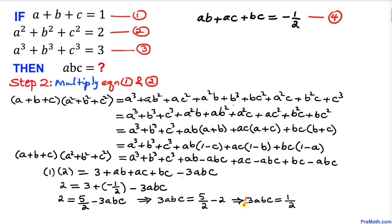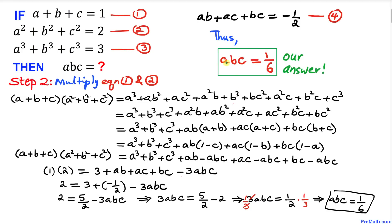Isolating abc by multiplying both sides by 1/3, the 3 cancels and we get abc = 1/6. That's what we were looking for — abc turns out to be 1/6. Thanks for watching, and please don't forget to subscribe to my channel for more exciting videos!